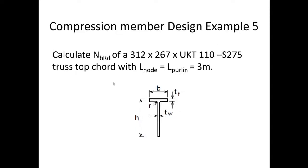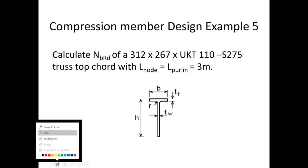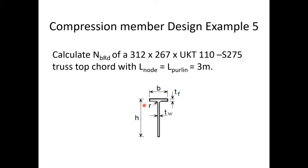This is the fifth example for compression member design - the last in the series. The task is to calculate the buckling resistance of a T-section cut from a universal beam: a 312×267×UKT 110 kg/m section, from grade S275 steel. It is a top chord member of a truss with a length of 3 meters.